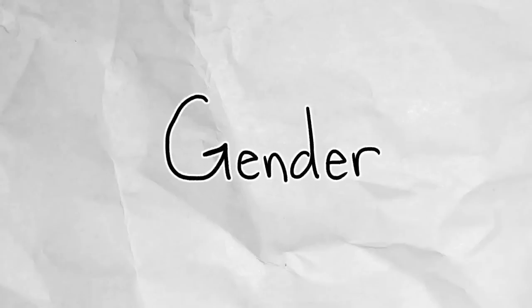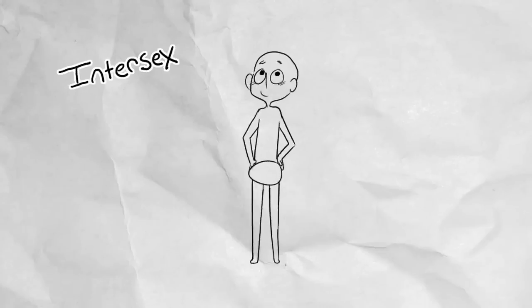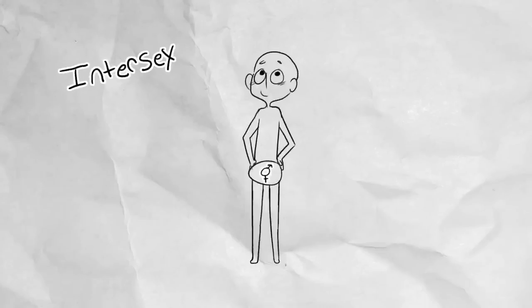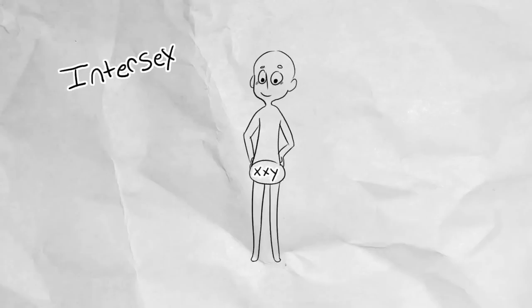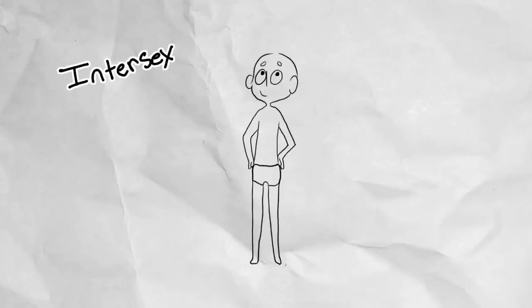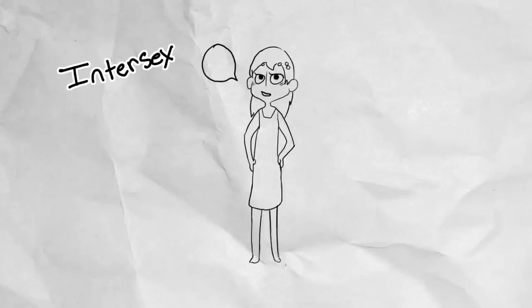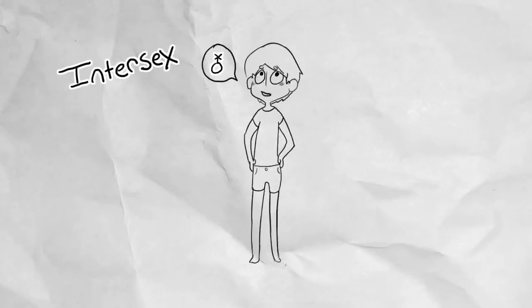There is more than just male and female in the gender spectrum. Intersex is when a person is born with both male and female parts, usually having an XXY chromosome. They can choose which gender they would like to be identified as, or they can identify as neither.